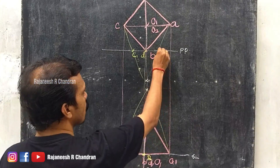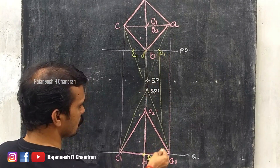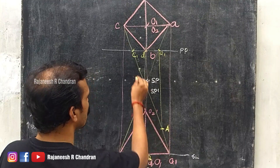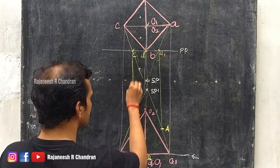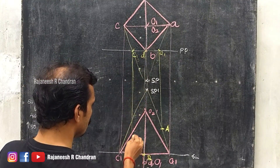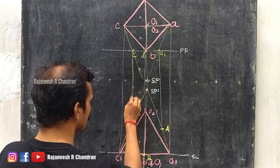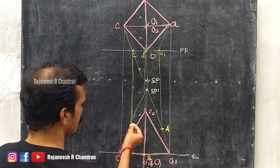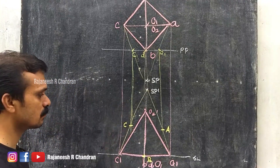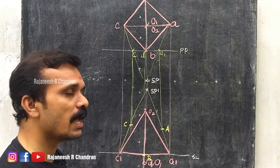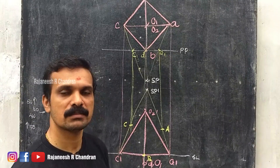Now draw a perpendicular from A — this will be capital A. Draw a perpendicular to project C1 — this will be capital C. So A, B, and C have been obtained.